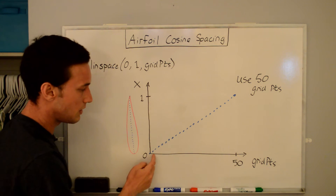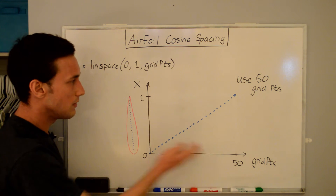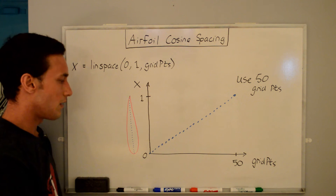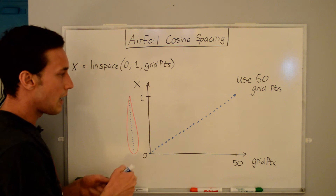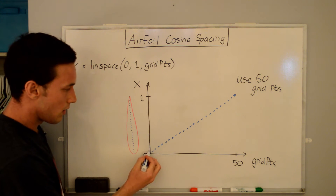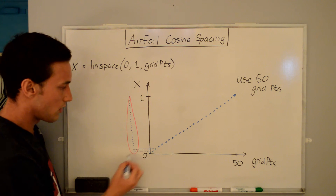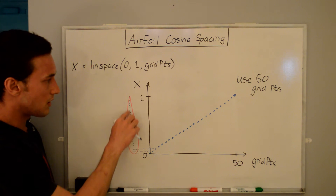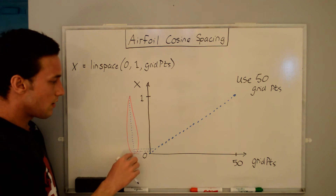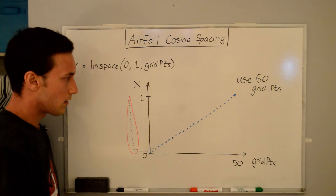And that's what this is saying. For each grid point — zero, one, two, three, four, five, all the way to 50 — they're evenly spaced going up to one. From this plot, you can draw a line over to the corresponding data point on the airfoil. They're all evenly spaced, and you'll get that uniform spacing along the airfoil.